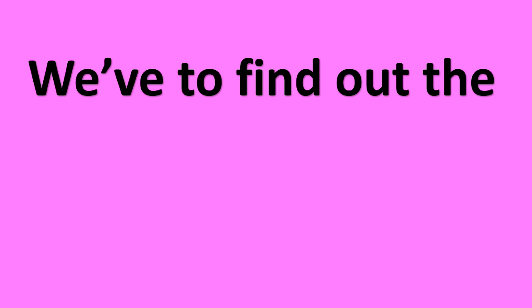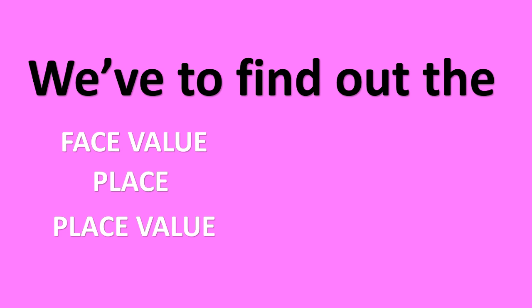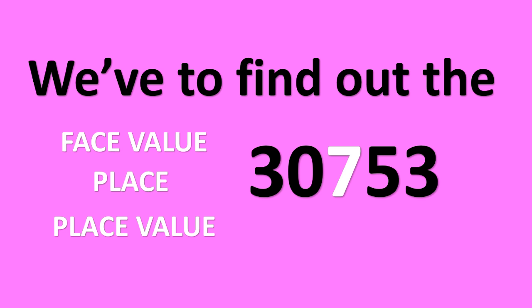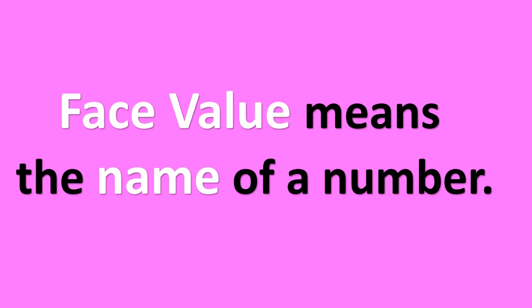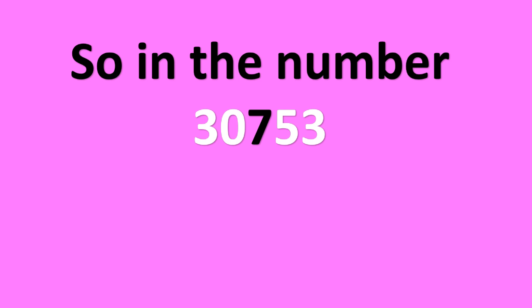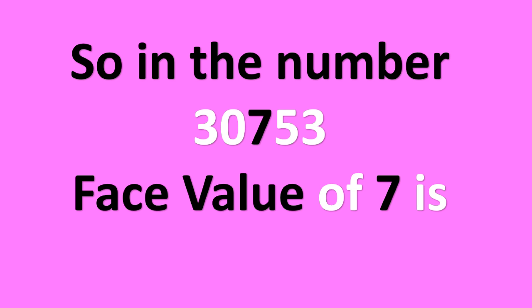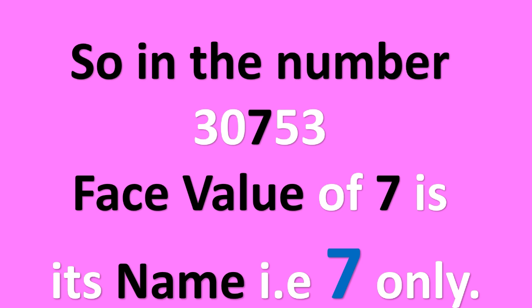We have to find out the face value, place, and place value of seven in the number 30753. Now, face value means the name of a number. So the face value of seven is simply its name — that is seven only. It's simple to remember but students often get confused.